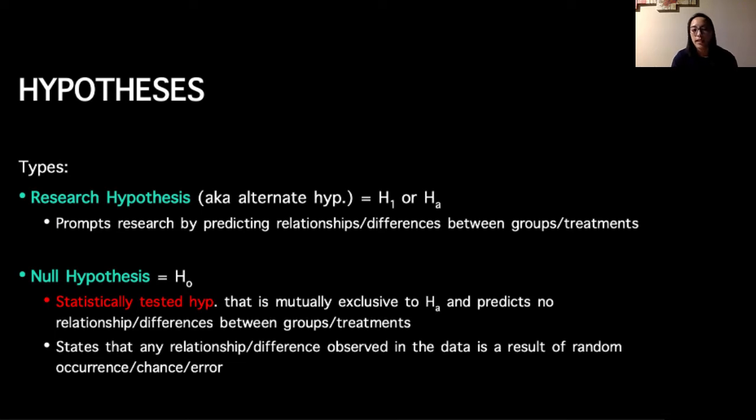What we're saying here is that either the relationships or effects that we observe are a result of random occurrence, chance, or error, or that is just what exists in the population. Maybe the intervention we used is not effective in changing that currently existing relationship.